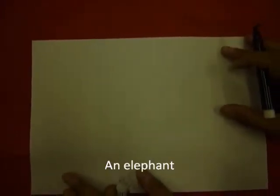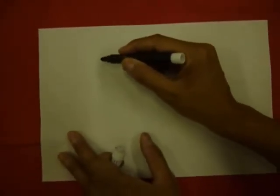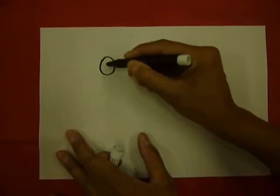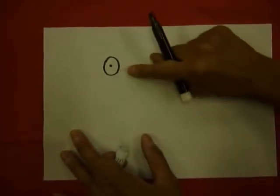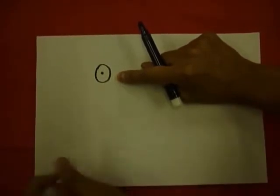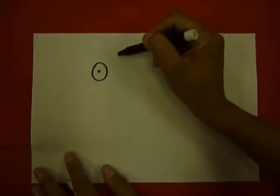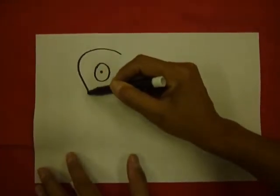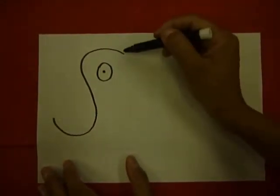The elephant. First we draw the elephant's eye. We're going to draw one big eye. The elephant has two eyes, but we're going to draw one. The head. It's an S.